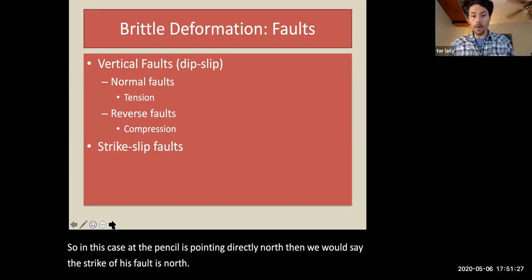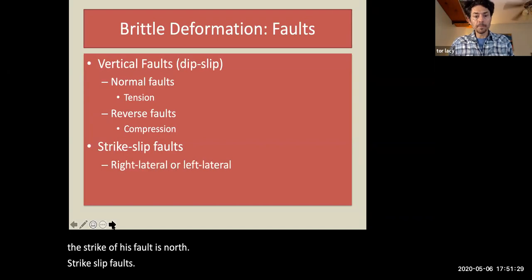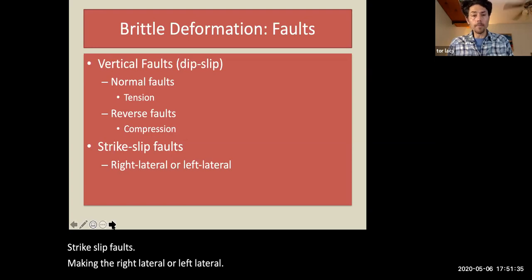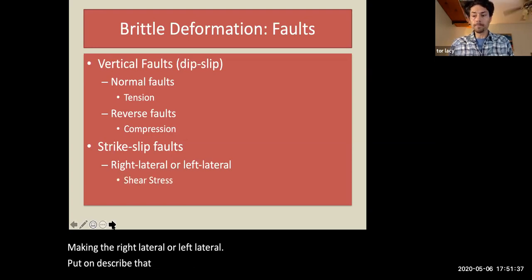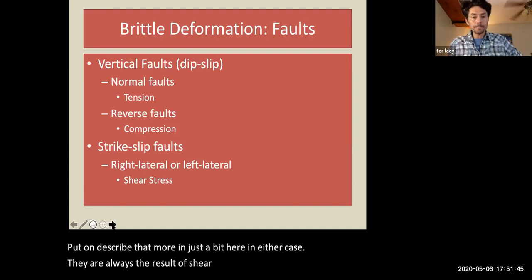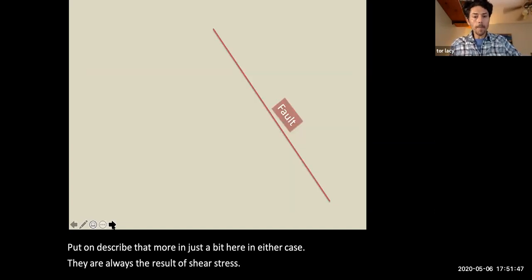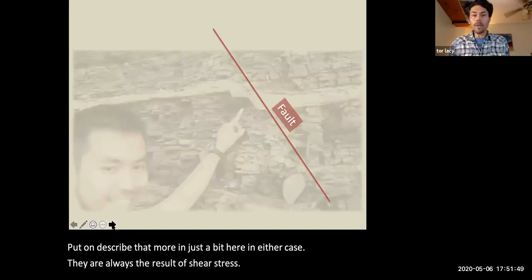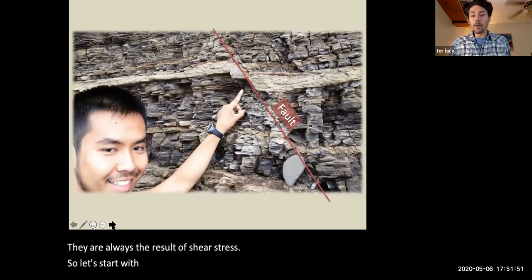The direction that it's cutting in terms of a compass represents strike. So in this case, if the pencil is pointing directly north, then we would say the strike of this fault is north. The strike-slip faults can be right lateral or left lateral. In either case, they're always the result of shear stress.